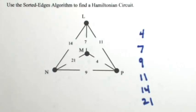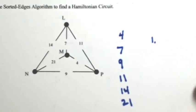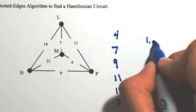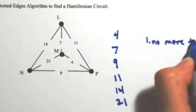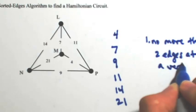So as we go through and select edges, we're going to be picking edges that don't do two things. The first thing is that we can't have more than two edges at a vertex. So no more than two edges at a vertex.